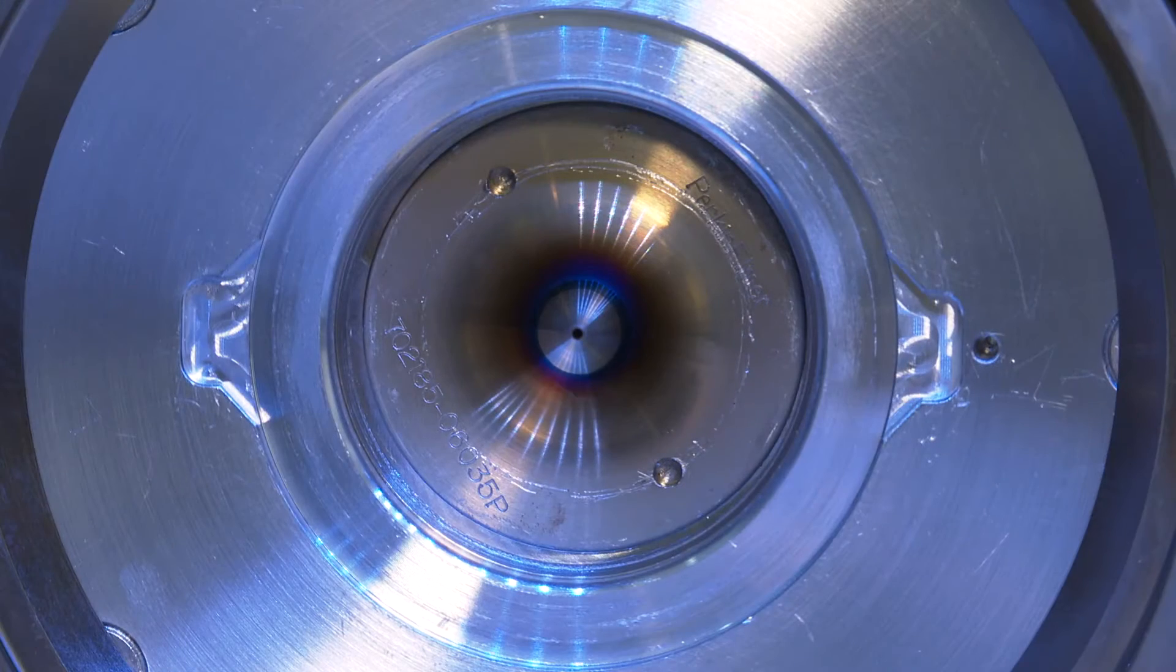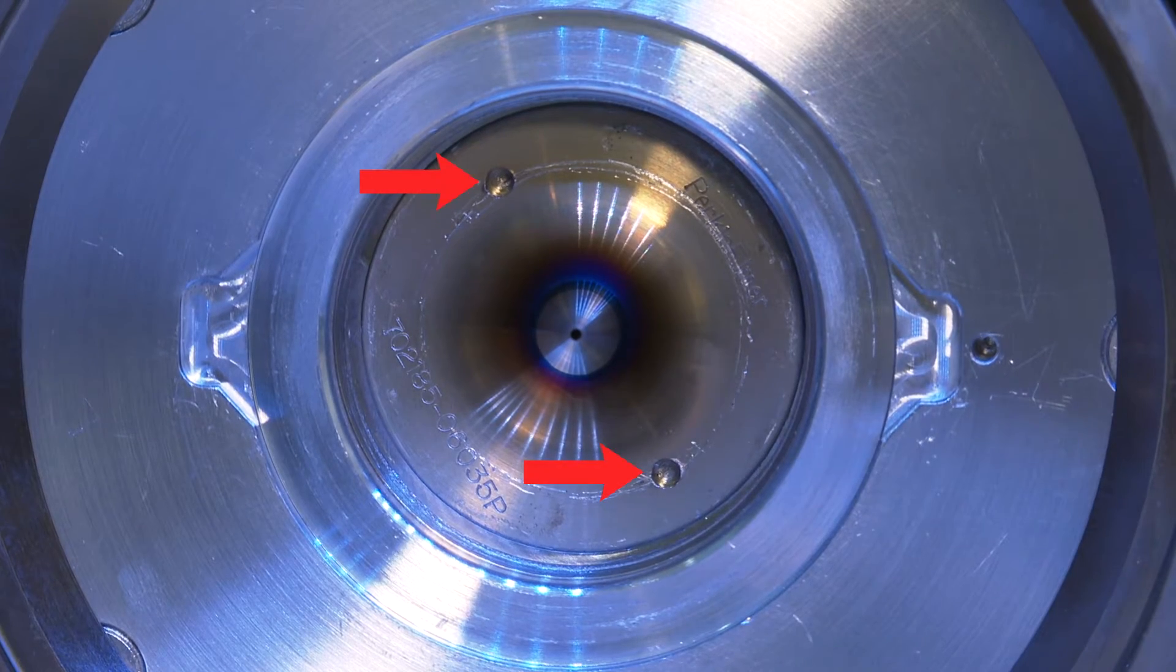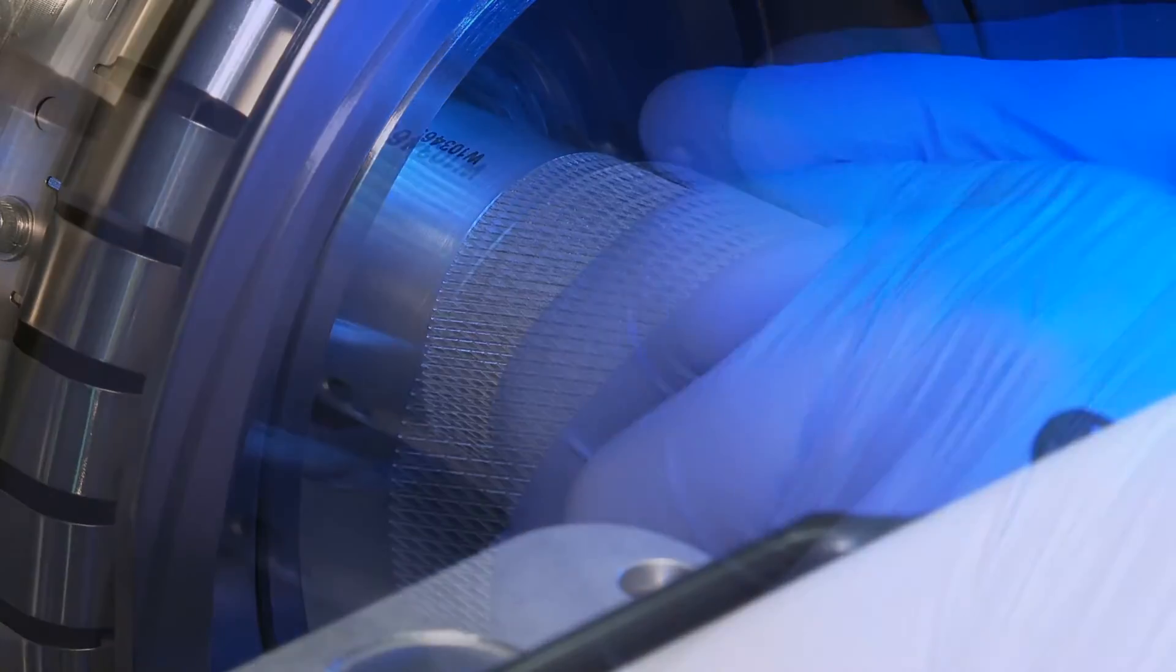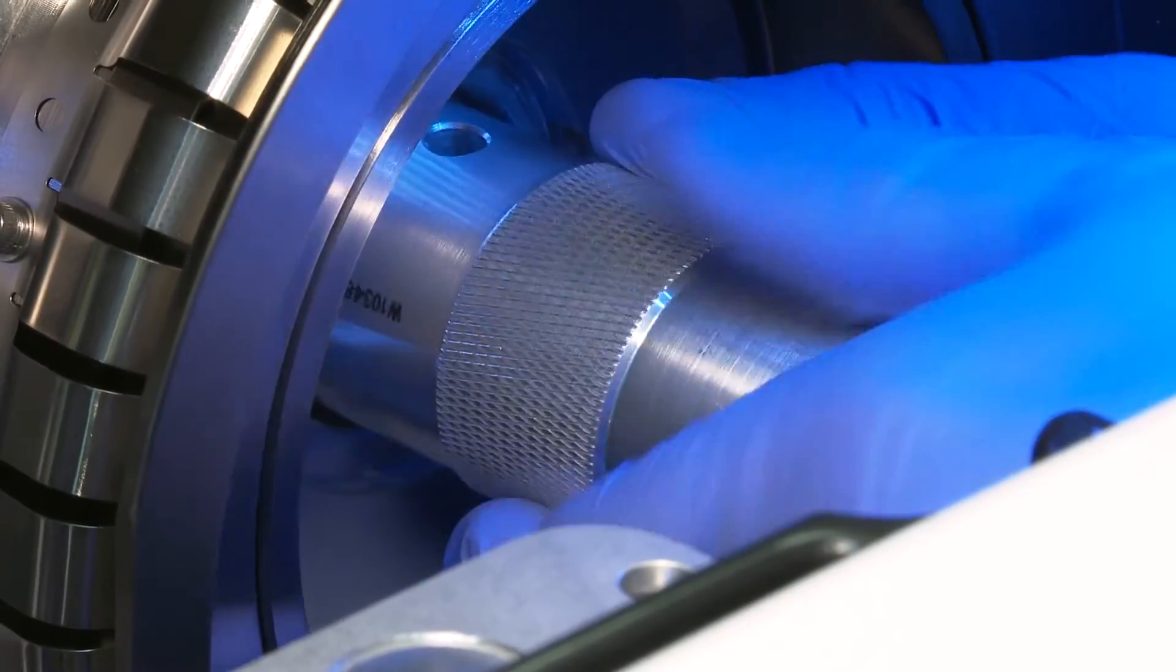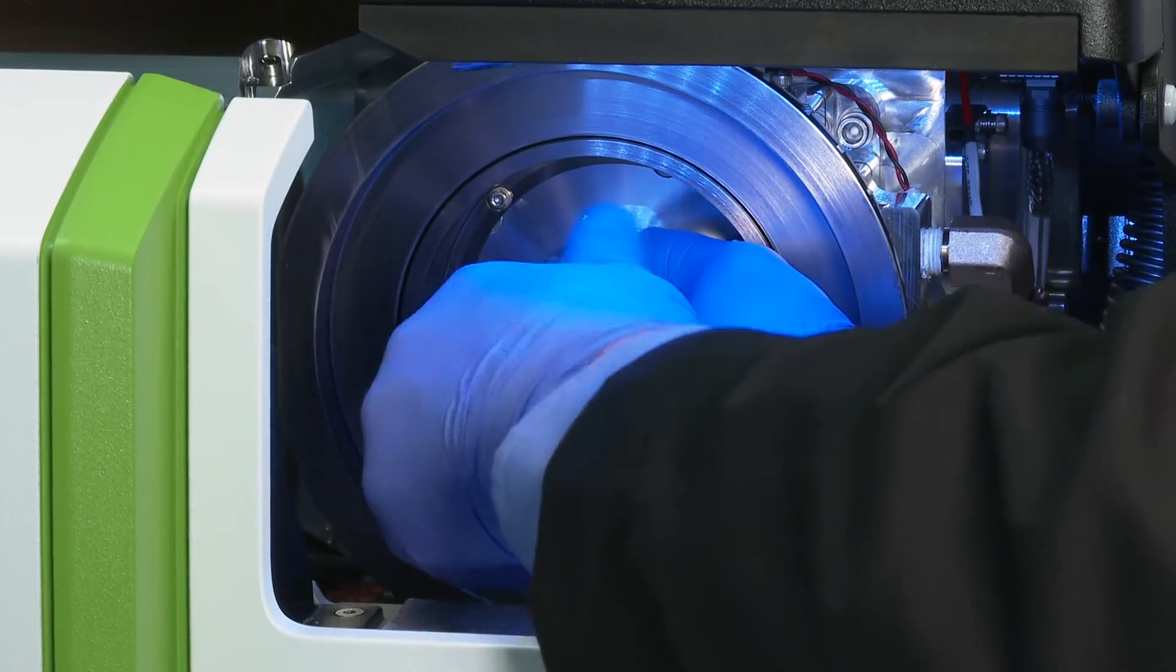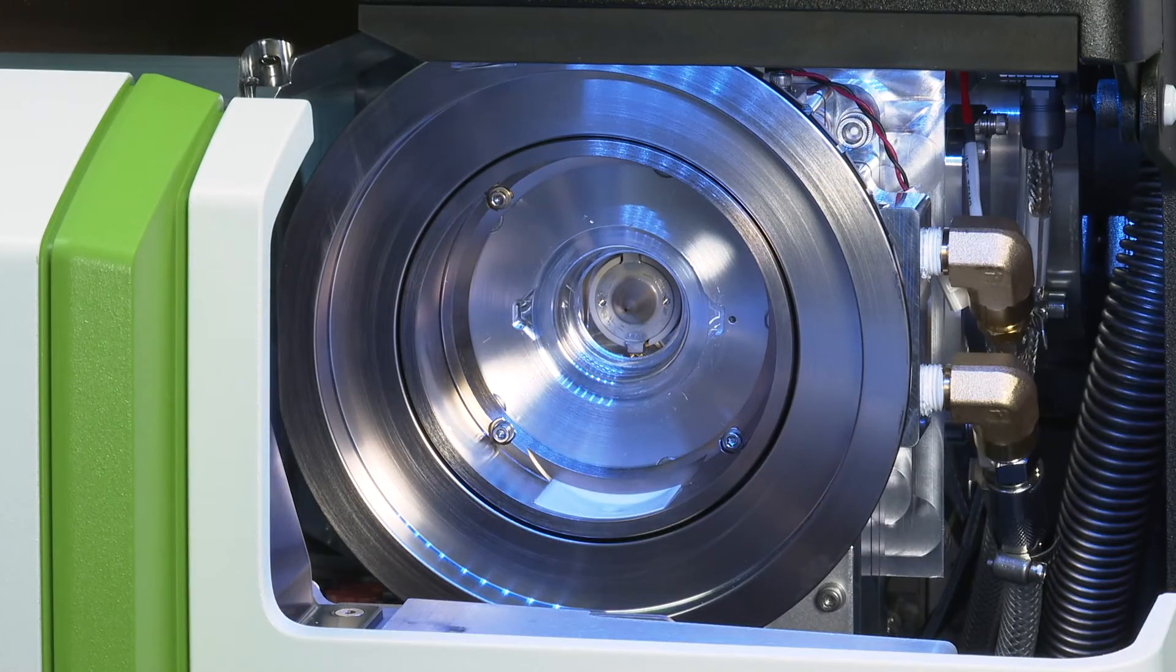To remove the skimmer cone assembly, insert the pins on the end of the cone removal tool into the skimmer. Once the pins have engaged, the magnets will secure the cone to the tool. Unscrew the skimmer by turning the tool counterclockwise, extracting both the tool and the skimmer. Place this cone on a clean work area next to your sampler cone.